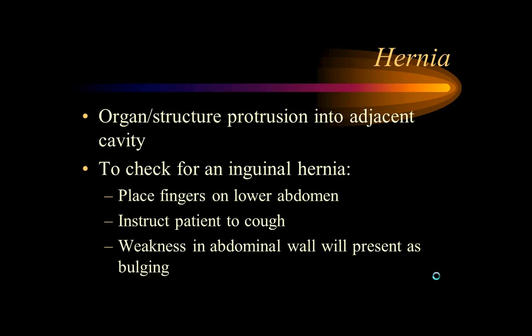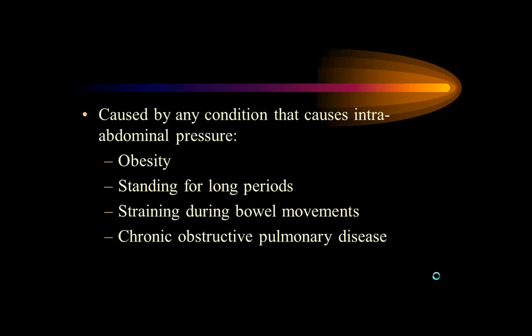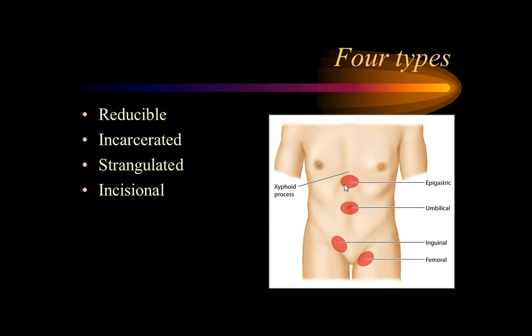Hernias occur when tissue protrudes through a weakened area. The most common location is the inguinal region — either a direct or indirect hernia. In older patients, indirect inguinal hernias predominate, going down through the inguinal canal. Other types include abdominal and umbilical hernias. Common risk factors include obesity, prolonged straining during bowel movements, and COPD with chronic coughing.